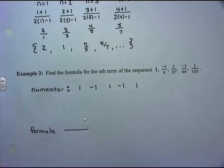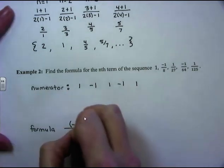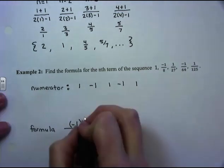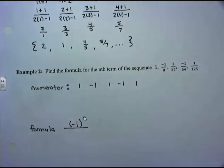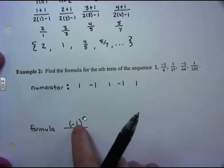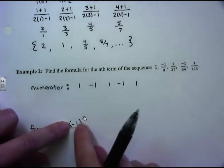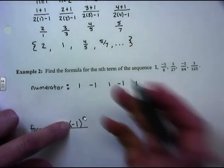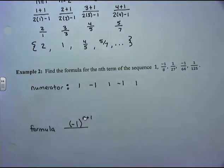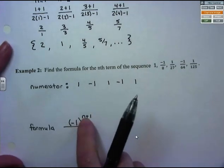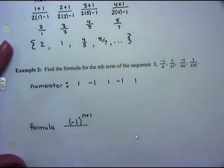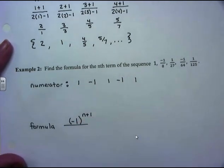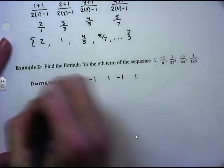A nice easy way to generate a positive value then a negative value is to use negative 1 raised to a power. If we raise negative 1 to the n, when n=1 that gives a negative value, but we want our first term to be positive. So one way to fix that is to write it as (−1)^(n+1) — negative 1 to the (1+1) gives (−1)², which is positive 1 for the first term. You could also write this as (−1)^(n−1). Now let's look at what's happening in the denominator.